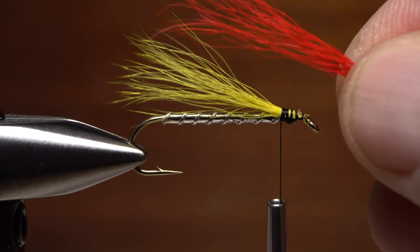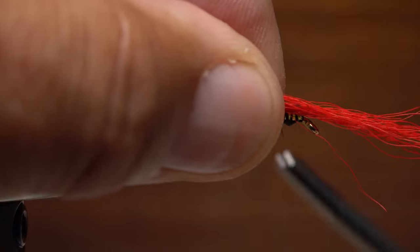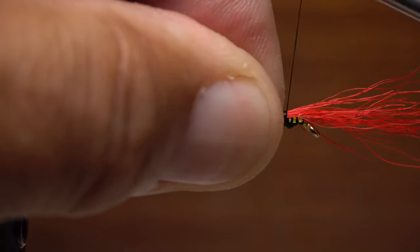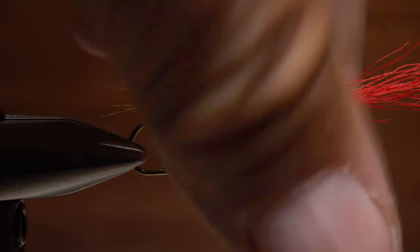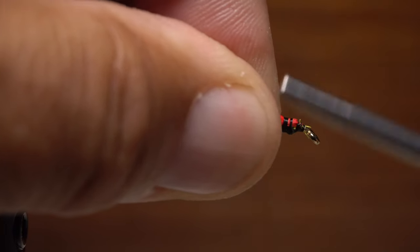Place the red bucktail on top of the yellow so their tips are aligned, then squeeze it in the fingers of your left hand as you take thread wraps to secure it. Just as you did with the yellow bucktail, snip the red off at a shallow angle and take thread wraps to lock it down.